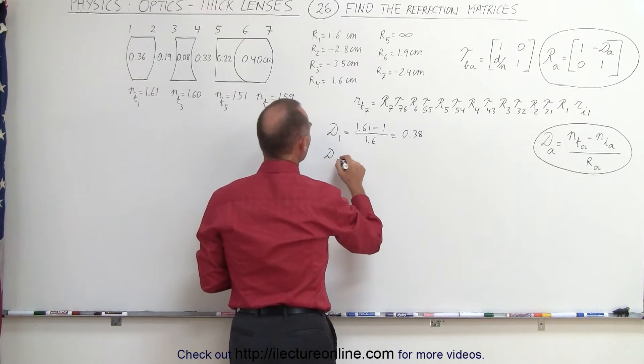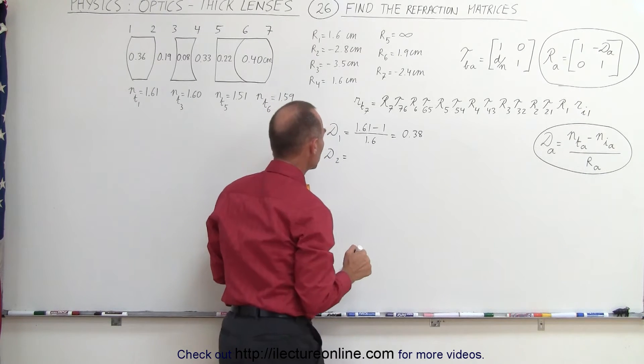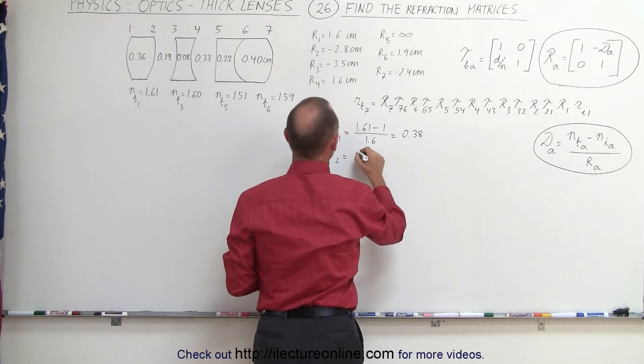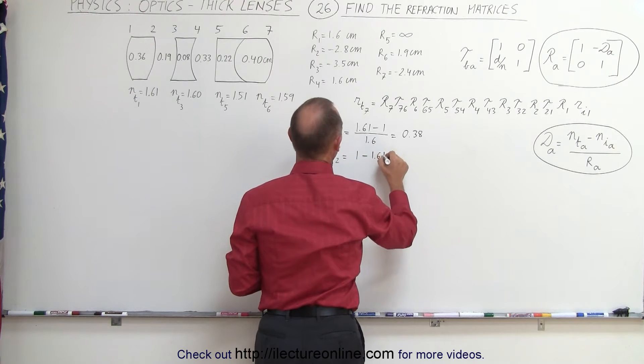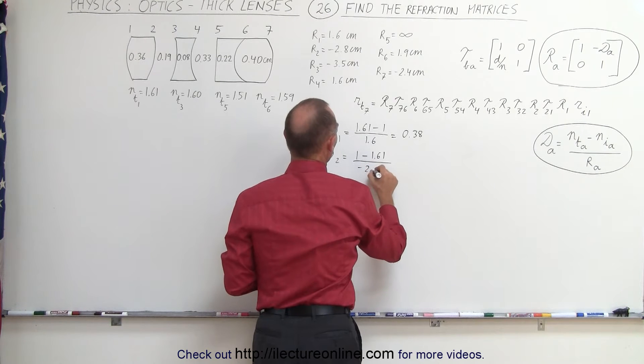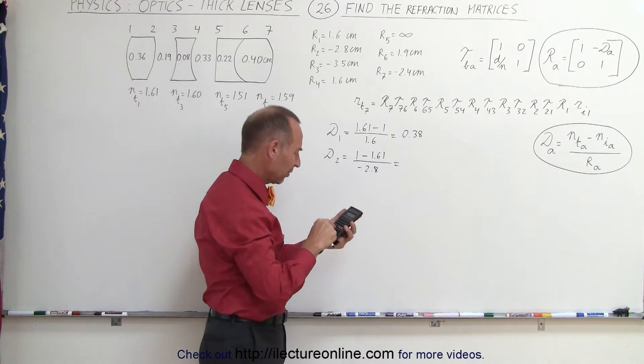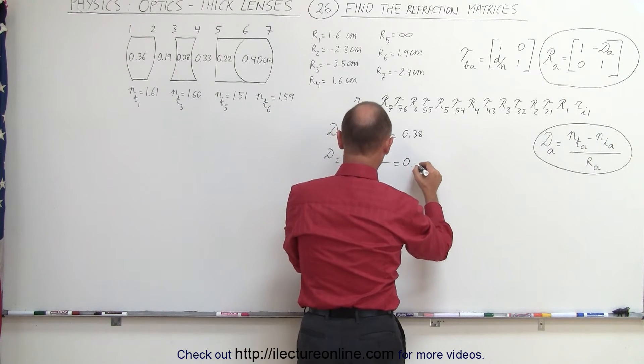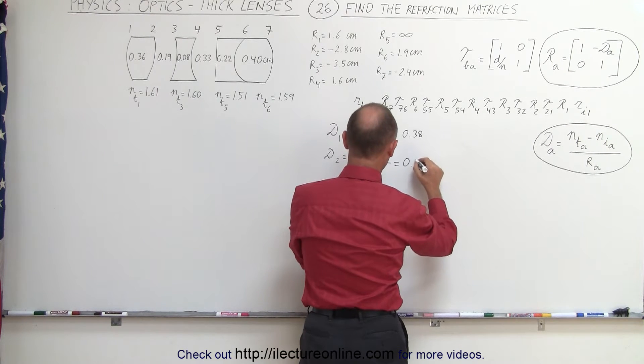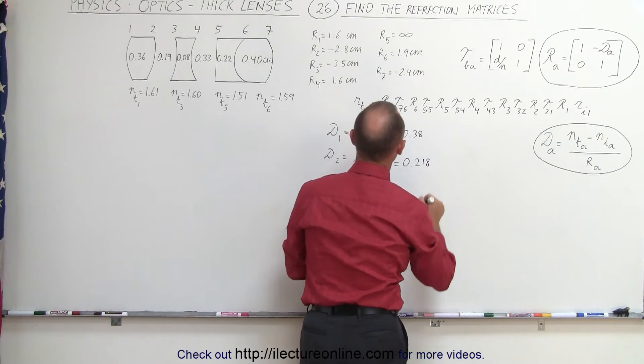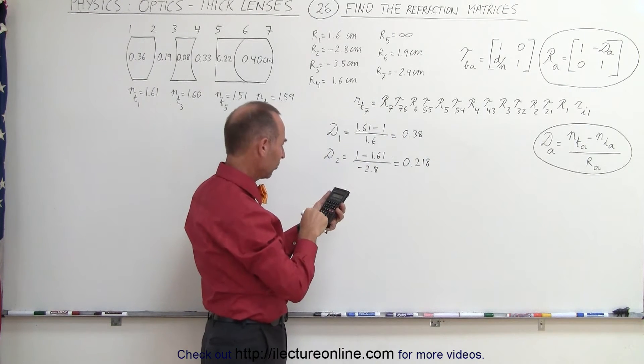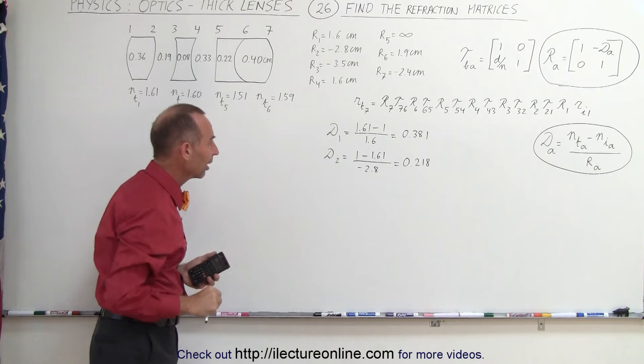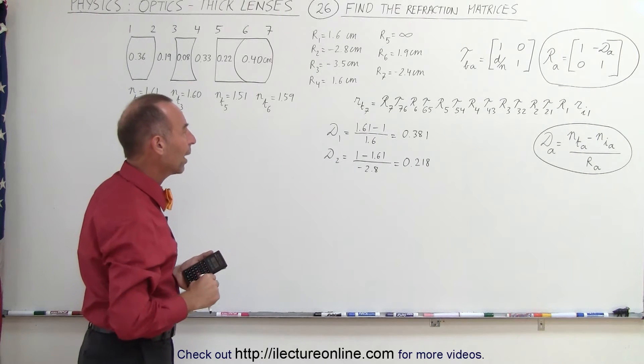The power of the second one is equal to, let's see here, that's across the boundary, so it would be 1 minus the index of refraction of the first lens, so 1 minus 1.61 divided by the radius of curvature, which is minus 2.8. So we get 0.61 divided by 2.8, and the power there would be 0.2. I'll keep three significant figures just in case, 0.218 will be a little bit more accurate. So we have 0.61 divided by 1.6, we have 0.381. We'll just keep three significant figures, keeps it a little bit more accurate, we have less rounding error if we do that.